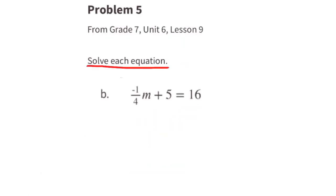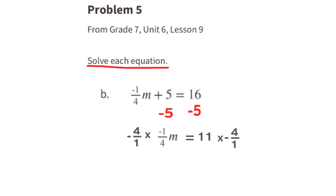Part b: subtract 5 from both sides — the positive 5 is cancelled on the left, and on the right 16 minus 5 is 11. Next, multiply both sides by the reciprocal of negative one-fourth, which is negative 4. On the left it cancels, leaving m, and on the right we get negative 44. So m equals negative 44.